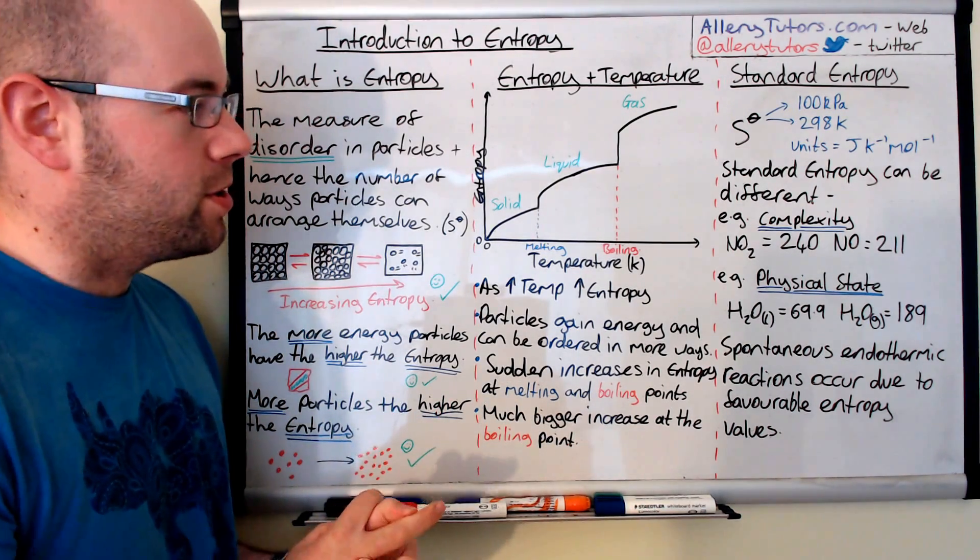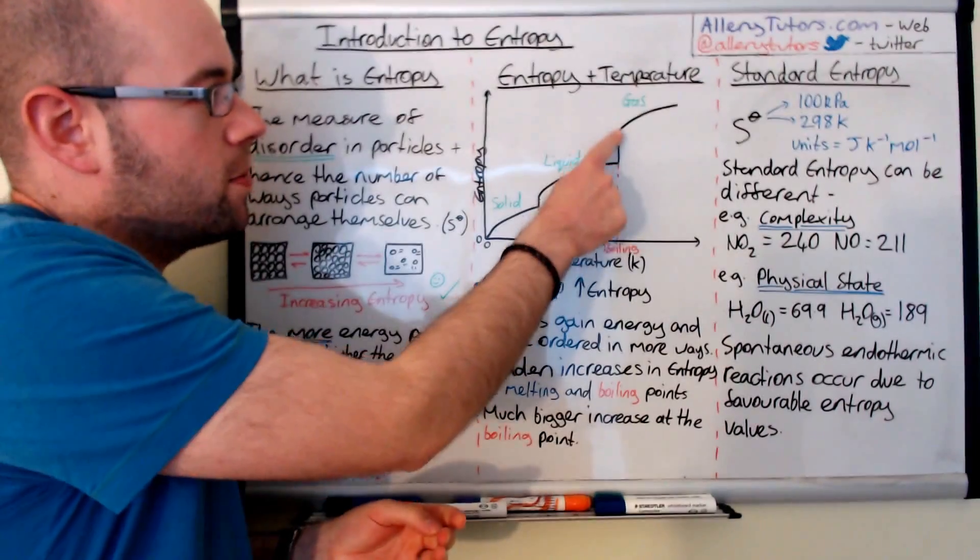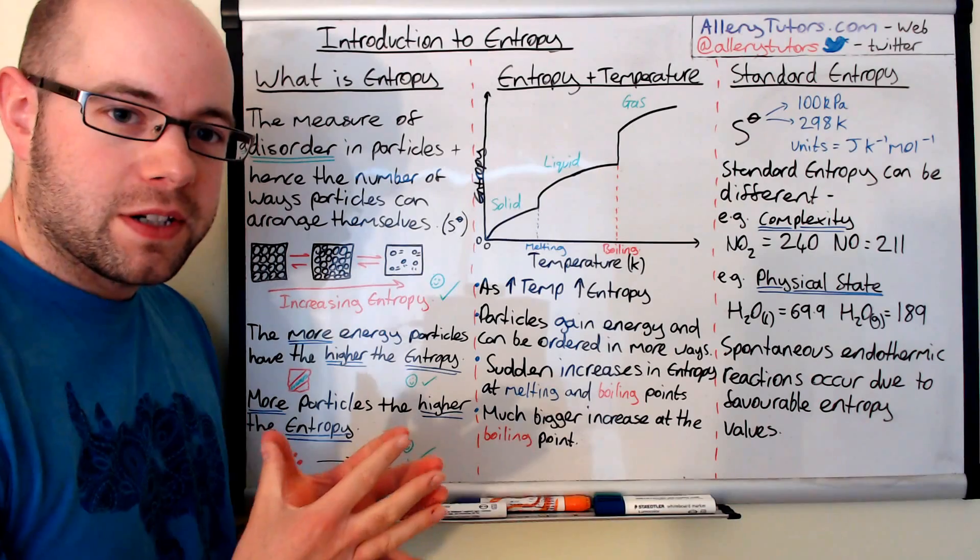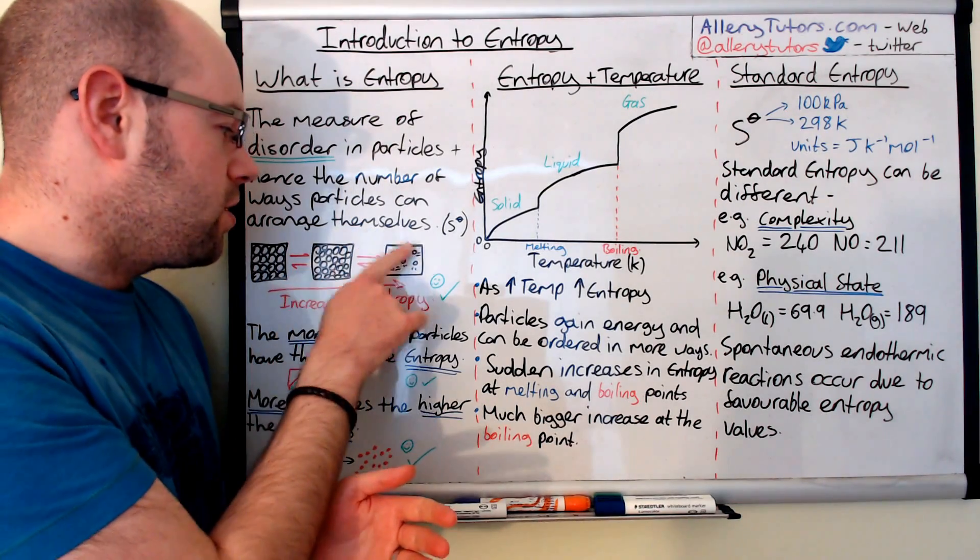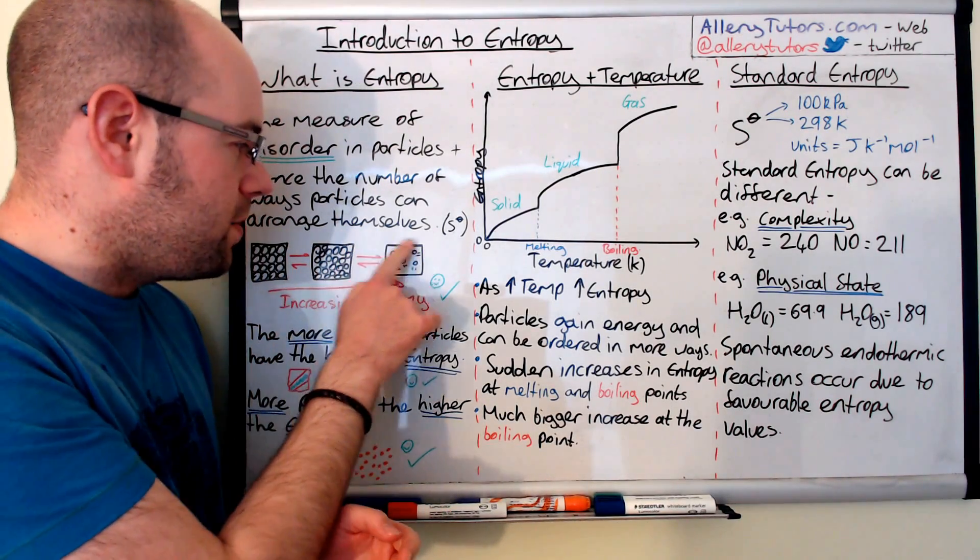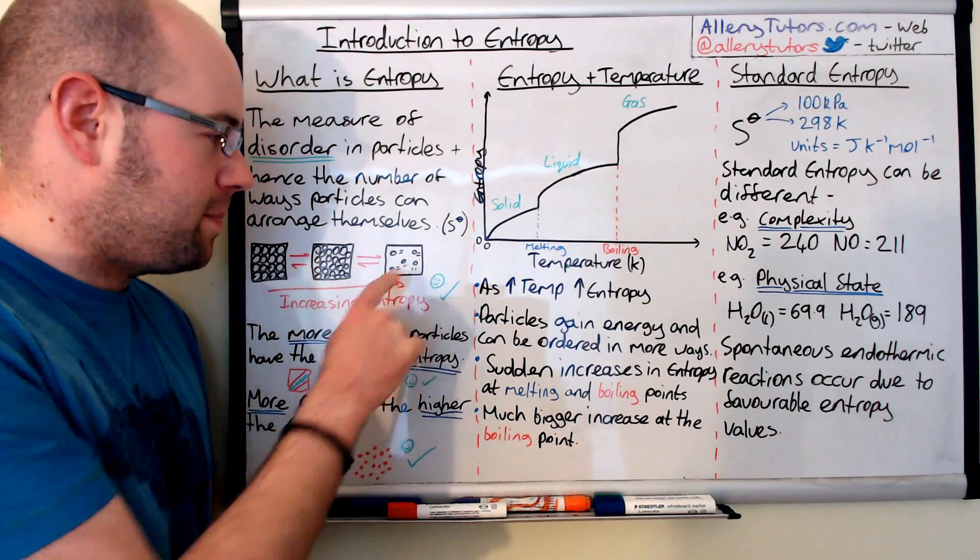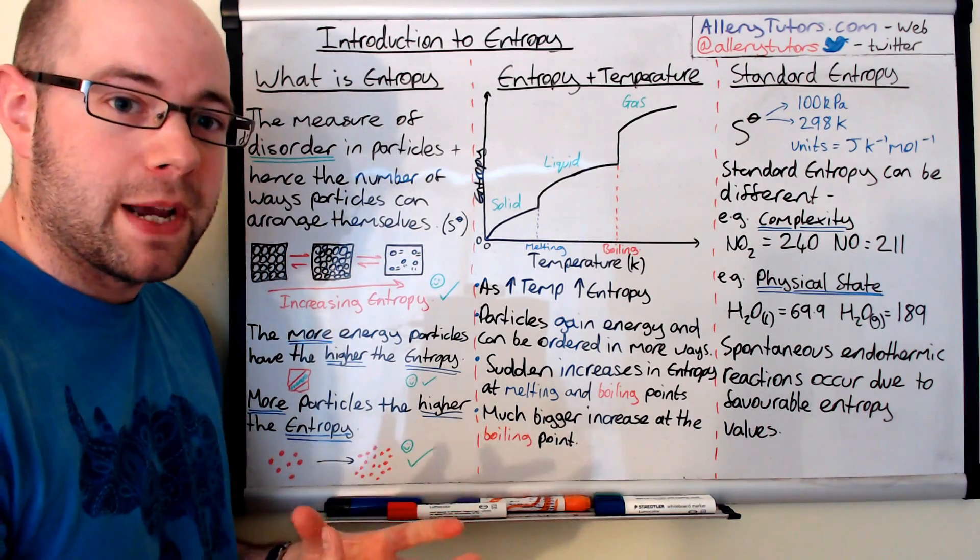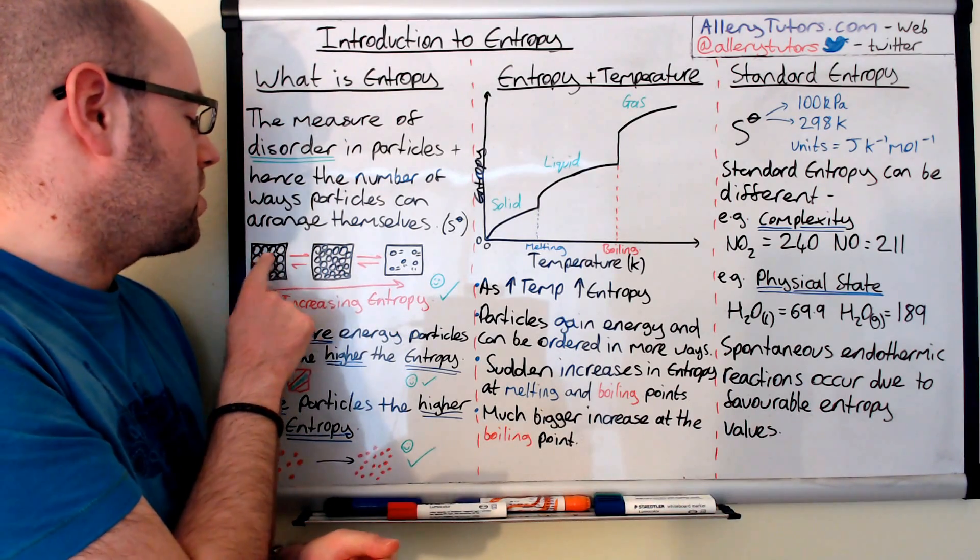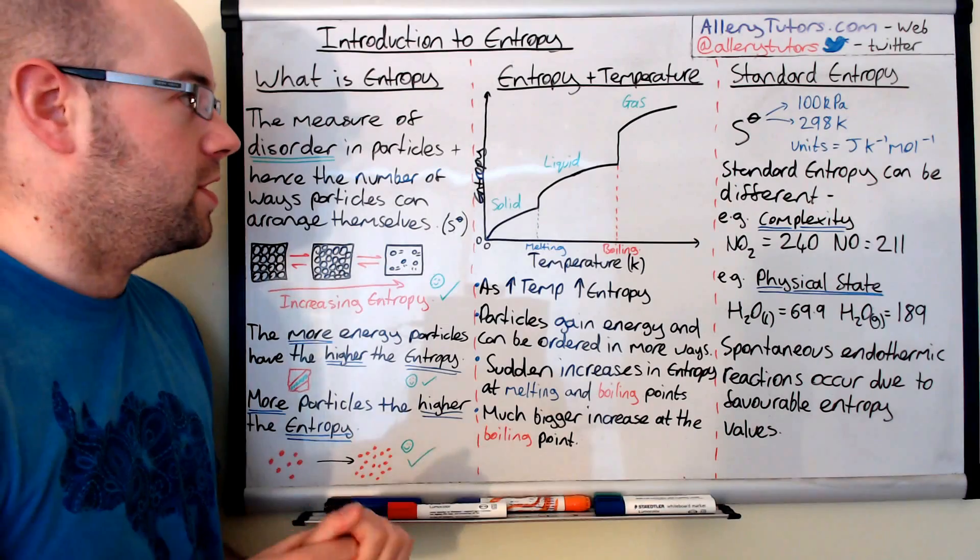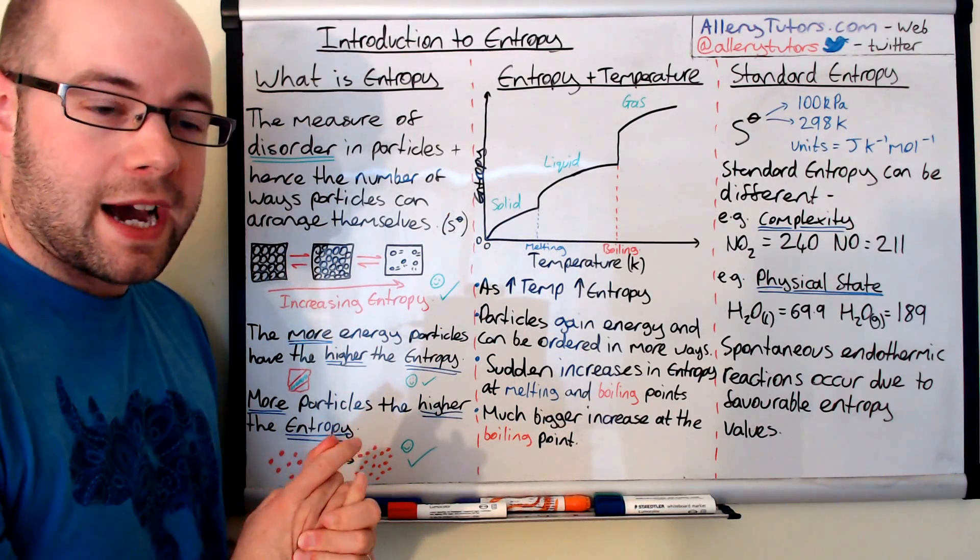An important point to notice is that this jump is a lot bigger than this jump. The reason is because particles in a liquid going into a gas—you can see the ways in which we can arrange these are significantly more, because the gap between the particles is significantly bigger compared to between a solid and a liquid. So the entropy value increases significantly between a liquid and a gas.